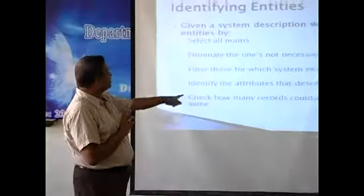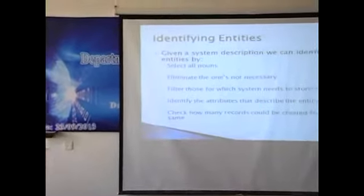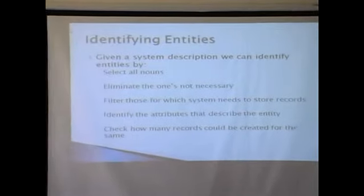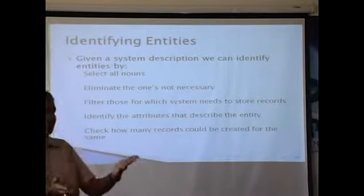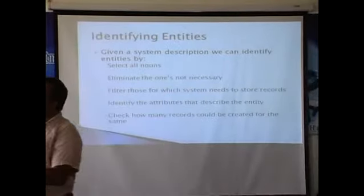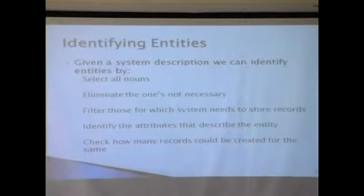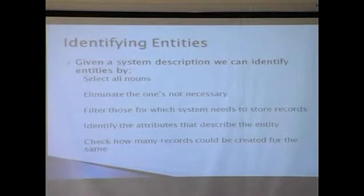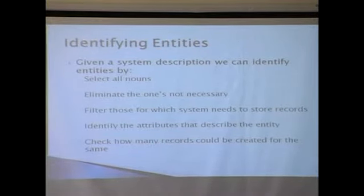Check how many records could be created. For example, in a bank we may keep on adding customers. In the college there would be a restriction — in a class we may have only 60 or 40 students. Every student when added becomes a record in the student table.